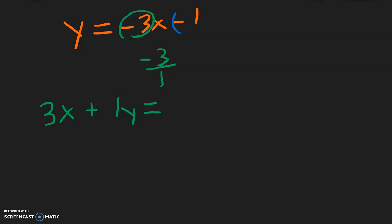So the y-intercept here is 0, negative 1, so let's plug it in. So 3 times 0 plus 1 times negative 1, 3 times 0 is 0, and 1 times negative 1 is going to be negative 1, so 0 minus 1 is negative 1. And here is our equation.